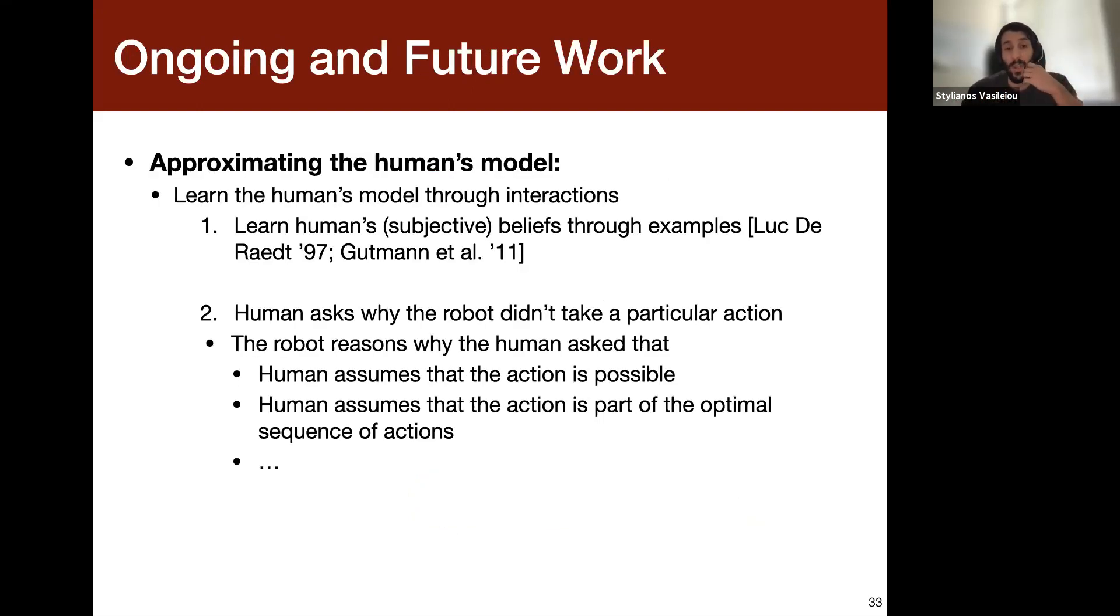So of course, as I said, this is an ongoing work that we're still investigating. And the overall goal is to try to also approximate the human's model. Because again, I think I forgot to mention that one of the major assumptions in model reconciliation is that the agent knows the human user's model a priori. And of course, that's not a very realistic assumption to make. So we have to relax that, and our idea of how to do that is basically through interactions. So first, if we want to learn the human's beliefs, we may be able to do that through examples. And there are some works from the probabilistic logic programming, basically learning through interpretations. So maybe we can leverage some ideas from there to learn the degrees of belief of the user, given what examples they give to the agent.